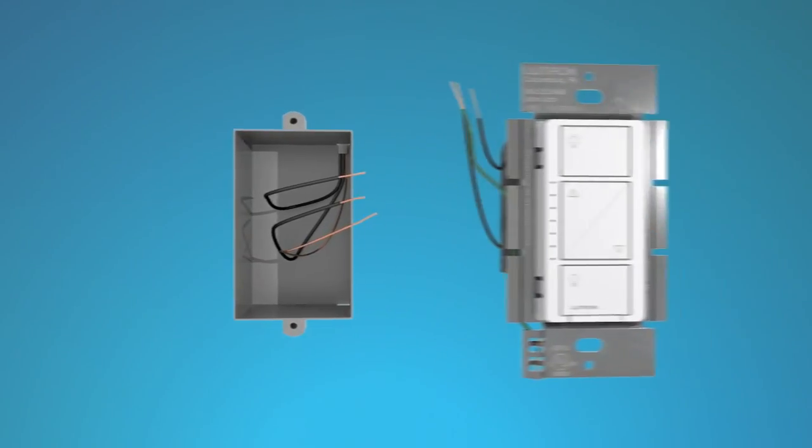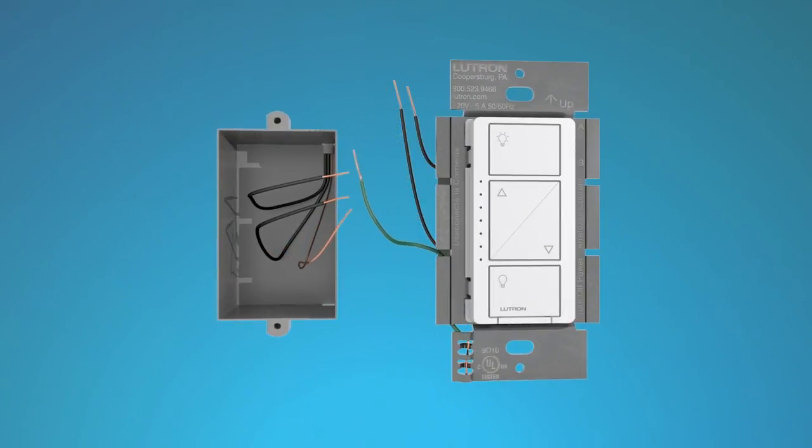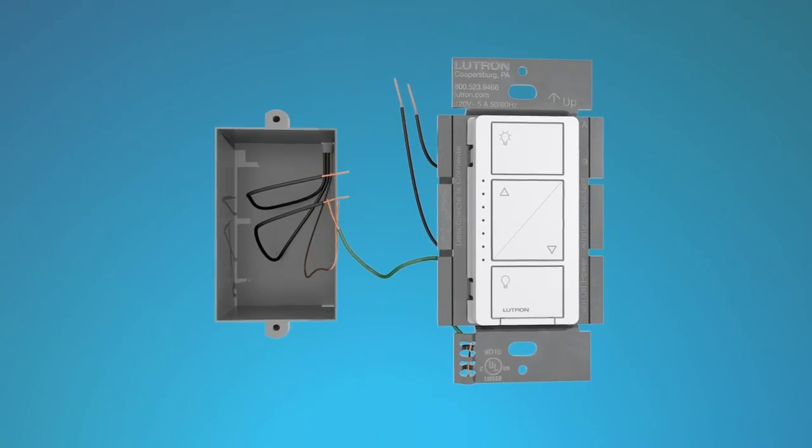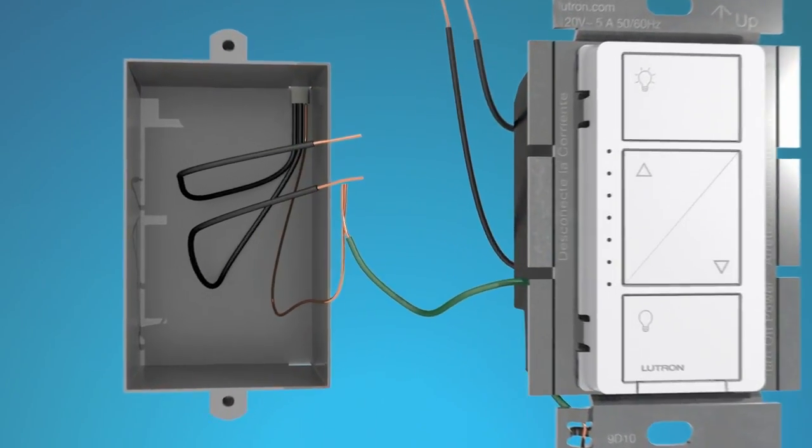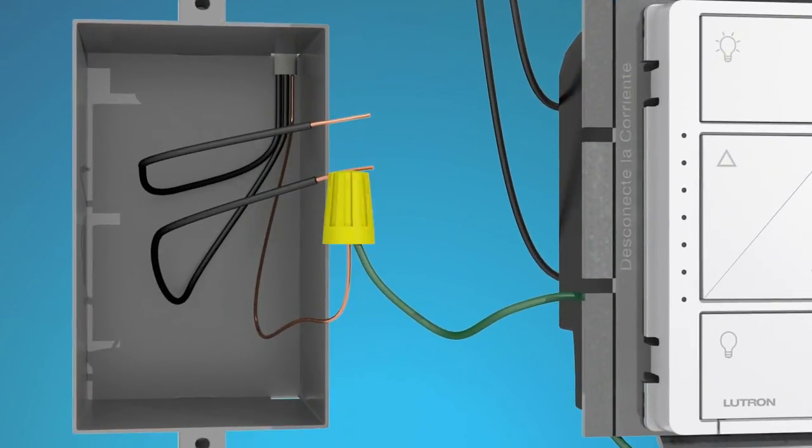Now you can install your dimmer. First, connect the green dimmer wire to the bare copper or green ground wire in the wall box using a wire connector that came with the dimmer. Twist clockwise to tighten the connector.